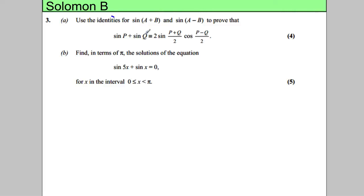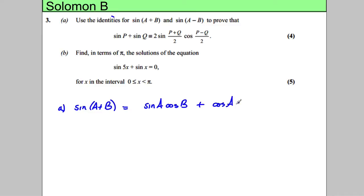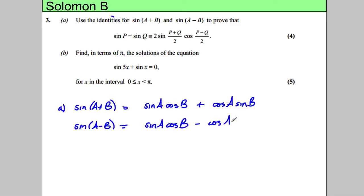It says use the following identities to prove the following is true, so let's firstly just write out the identities. Sine(A+B) — this is given in the formula booklet — is equal to sinA cosB plus cosA sinB. And sine(A−B) is equal to sinA cosB minus cosA sinB.